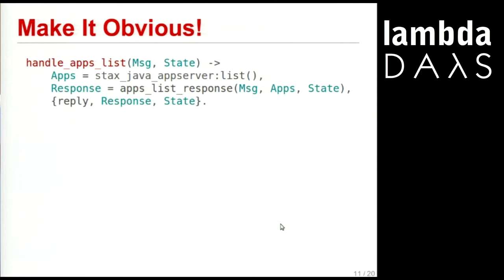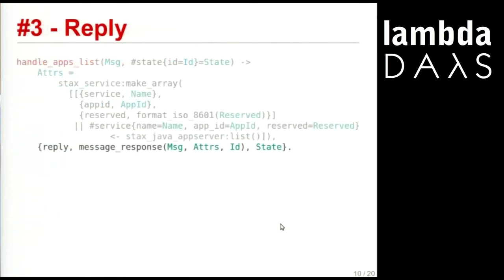Step three of the process: once you understand what's going on, make it obvious. So this is what I wanted: 'handle_apps_list.' Let's read it as a story. What does it do? It's listing the apps — simple. We went from really terrible complex Erlang code to that first line. It reads nicely: apps equals some module related to apps, list. Erlang isn't bad if you just take a moment to say what it is that you mean. Then we return some sort of response.